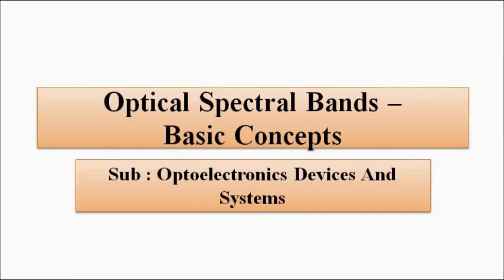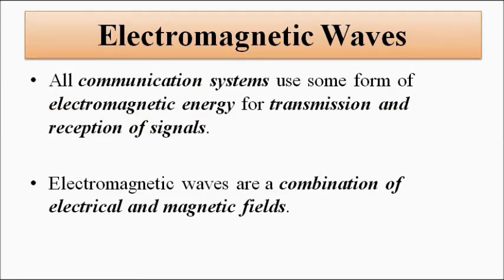All communication systems use some portion or some form of electromagnetic energy for the transmission and reception of signals — for example, microwave communication, radio wave communication, whether in wireless or wired form. The important factor in any communication system involving any portion of the electromagnetic spectrum is the electromagnetic waves.